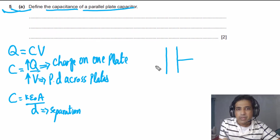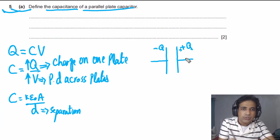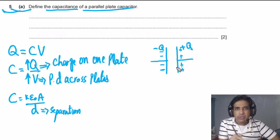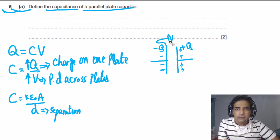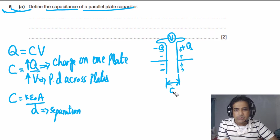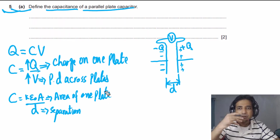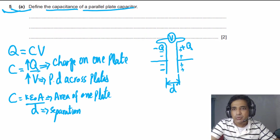Let me sketch a parallel plate capacitor. We have two plates: the net charge on one plate is +Q and on the other is −Q. We separate charges in a capacitor — the net charge magnitudes are equal. V is the potential difference between the two plates, measured with a voltmeter. D is the separation between the plates, and A is the area of one plate.